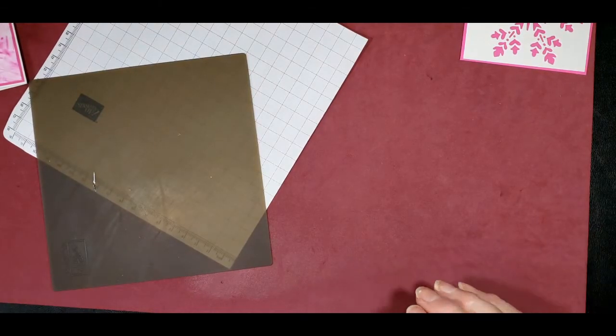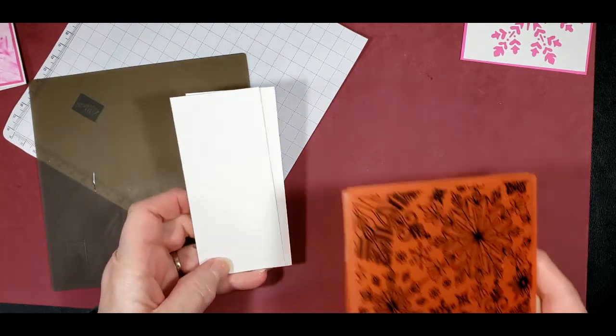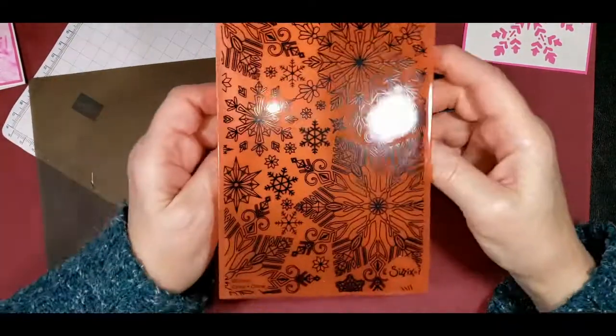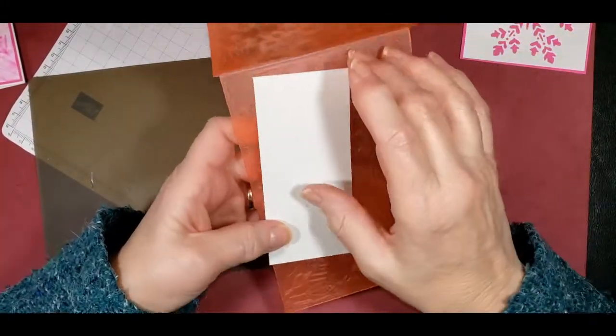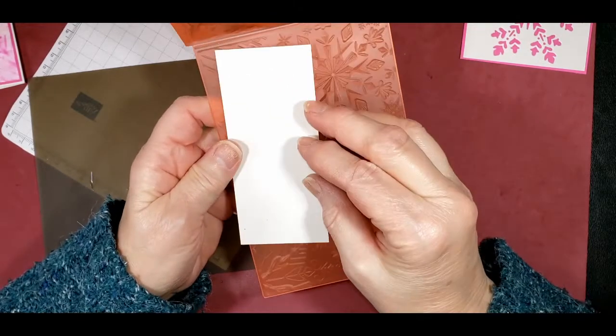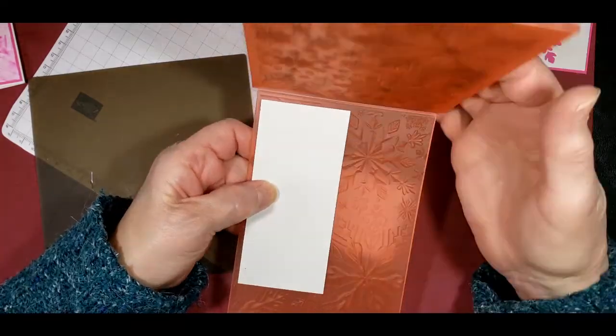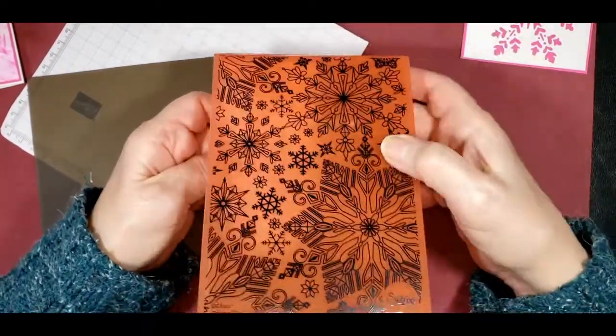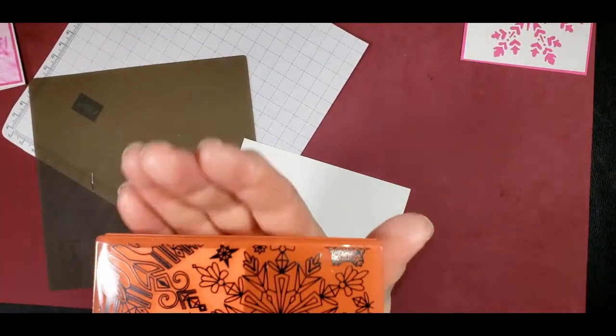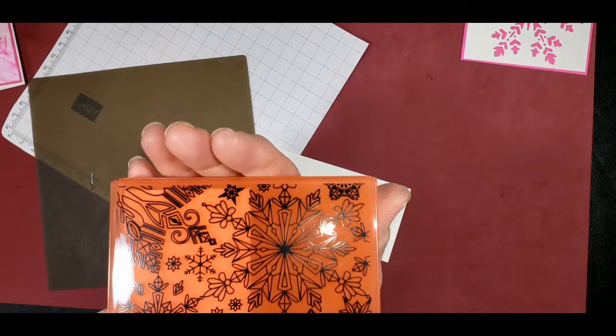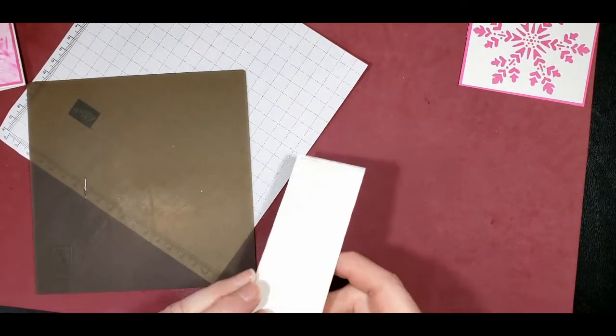And next we want to do is we want to emboss our pieces of paper using Wintry 3D embossing folder. This orange embossing folder is not a Stampin' Up folder. But I'm using it. And you just want to put it in here and have it straight. And then you close it and you run it through this way. So this goes into the machine pointing this way. And I've already done it. So I've got two already embossed.